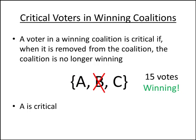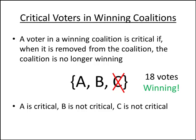If instead we remove voter B, we still have 15 votes remaining, so the coalition is still a winning coalition, which means B is not a critical voter. Similarly, C is also not a critical voter, because if C is removed, the remaining voters still have enough votes to win.